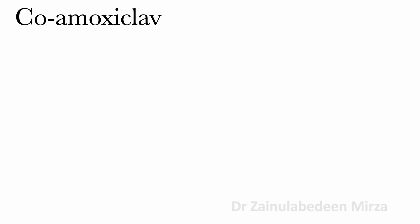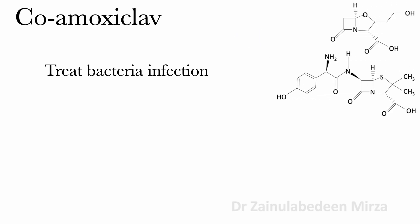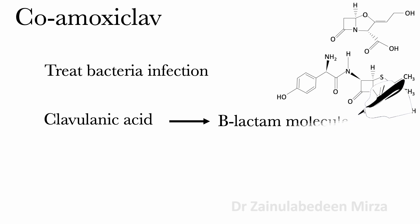Co-amoxiclav is an antibiotic used to treat bacterial infections. These antibiotics contain amoxicillin mixed with clavulanic acid. Clavulanic acid has a beta-lactam molecule that has antibacterial activities and binds to beta-lactamase enzymes.